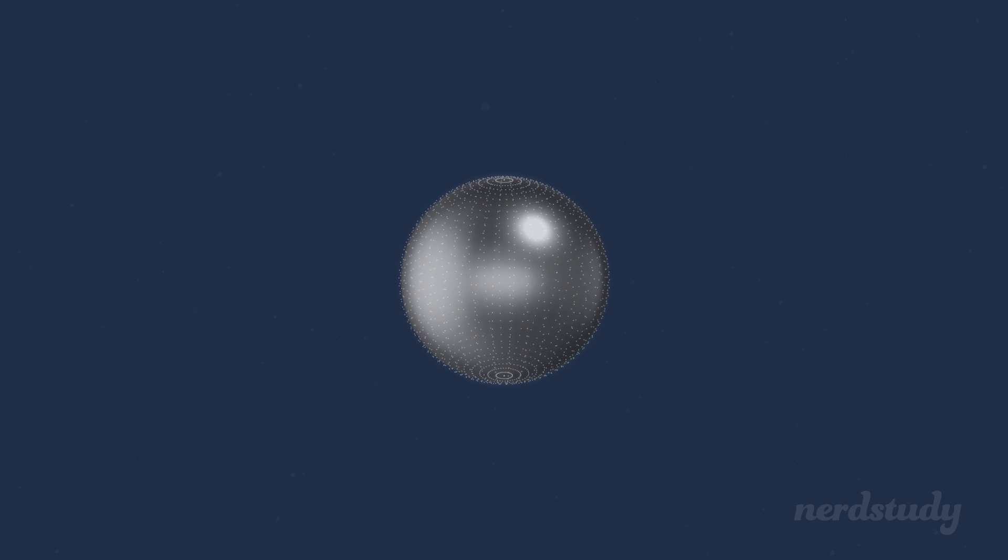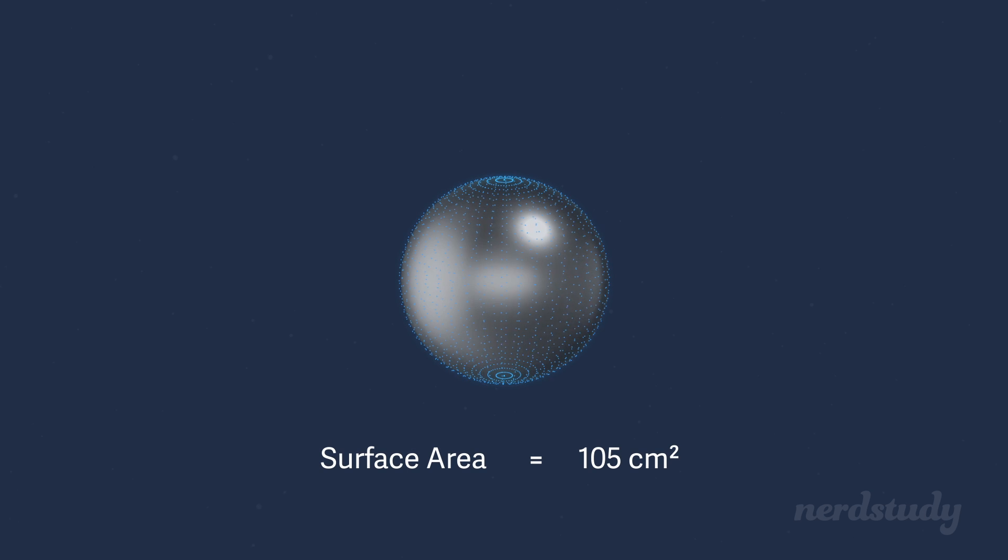Let's try one last question to end off this super easy lesson. What if I gave you the surface area of a sphere and told you that it was 105 centimeters squared? Would you then be able to find the radius just with that information alone?